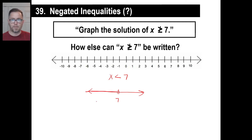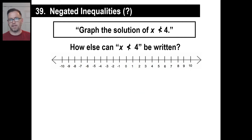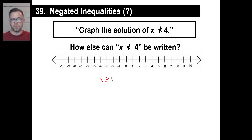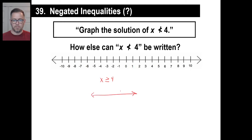If X is not less than 4, then X must be greater than 4, and also equal to 4, right? If it's not less than, it can be the other two things. So if X is greater than or equal to 4, then very quickly — boom — there's your 4. It includes the equal, so you fill in the circle and go greater than.